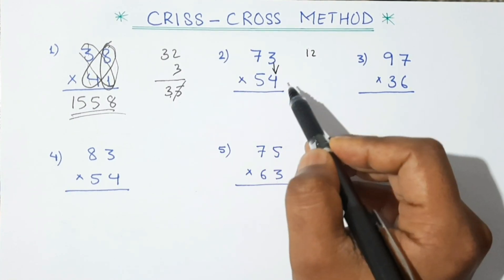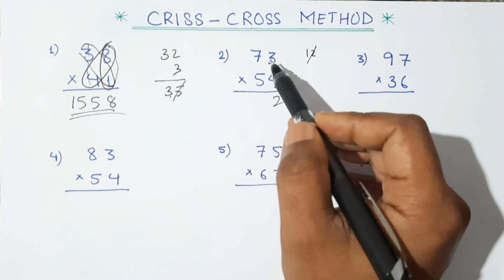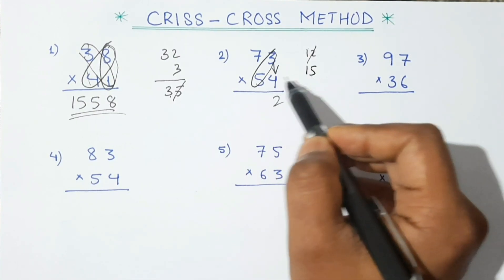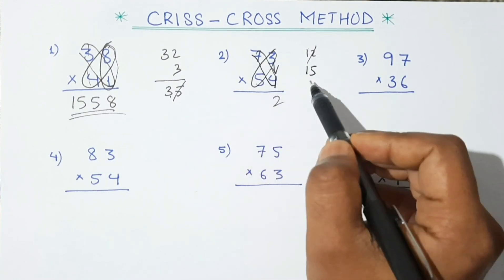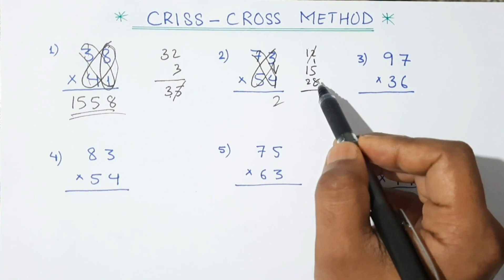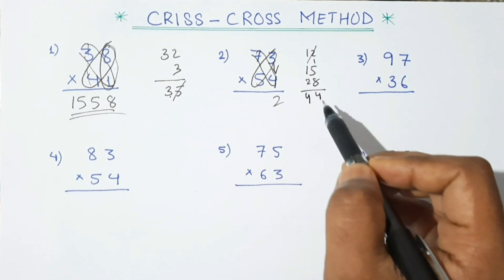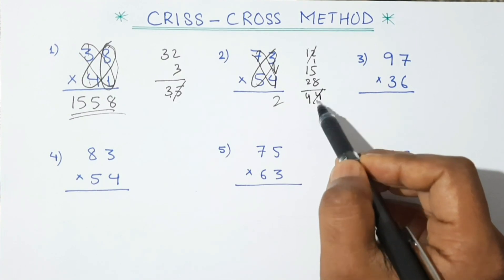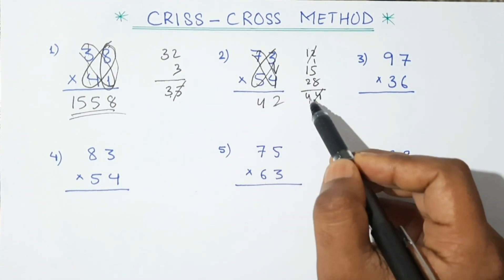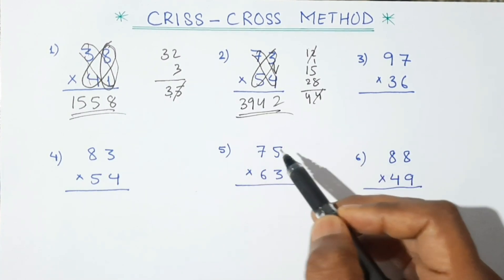Here, first we multiply the units: 3×4 is 12, we write only 2 and carry 1. Now cross multiply: 3×5 is 15, and 4×7 is 28. Adding with the carry 1 gives 44, we write only 4 and carry 4. Now 7×5 is 35, plus 4 is 39. So this is our answer.